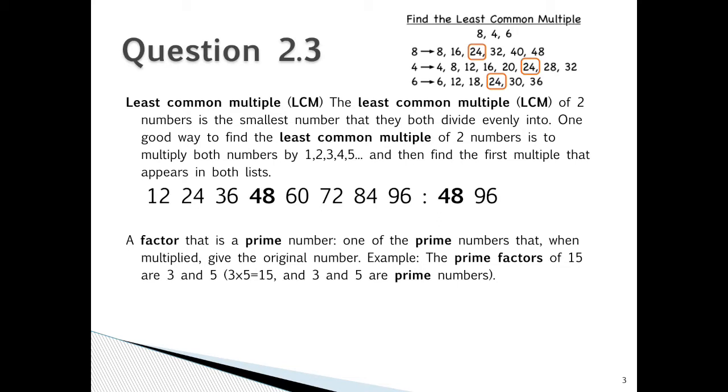So for our question 2.3: 12, 24, 36, 48, which is the first one, 60, 72, 84, 96. And then for the second number that we had, 48 and 96. So 48 is the common number.